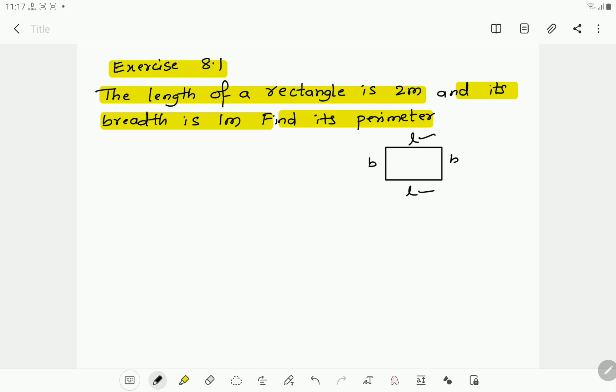What is the formula to find the perimeter of a rectangle? Perimeter of a rectangle is equal to... L is 2 meters. L is 2 meters and what is B? B means breadth. L means length. B is equal to 1 meter.